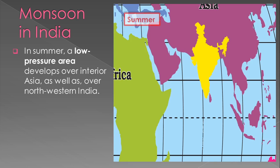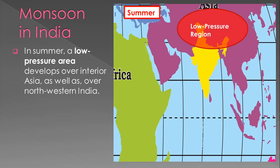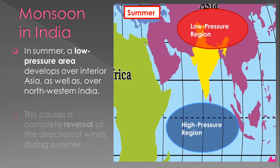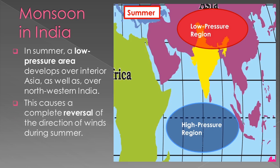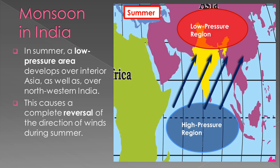In summer, a low pressure area develops over interior Asia as well as over northeastern India. This causes a complete reversal of the direction of winds during summer. Winds blow from the high pressure area to the low pressure area.